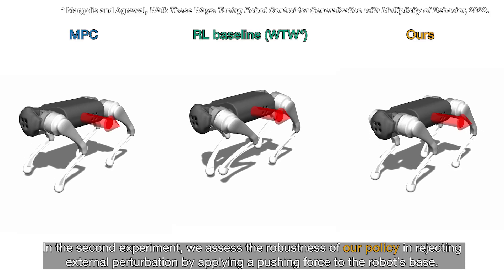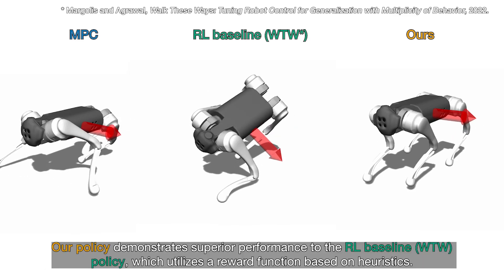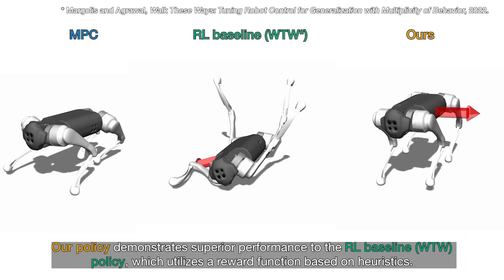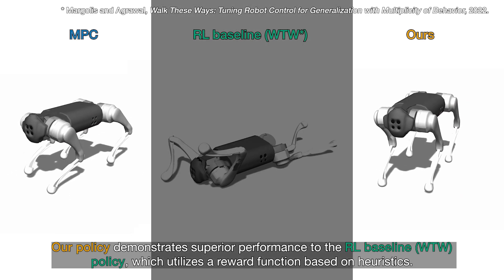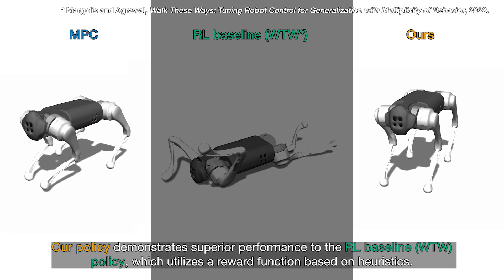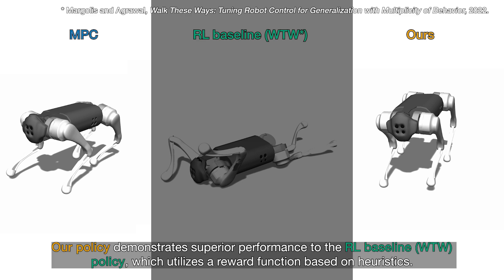In the second experiment, we assess the robustness of our policy in rejecting external perturbation by applying a pushing force to the robot's base. Our policy demonstrates superior performance to the RL baseline, namely the Walk These Ways policy, which utilizes a reward function based on heuristics.